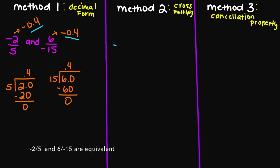Let's look at method number two — we cross multiply. So negative 2 over 5 and then 6 over negative 15. If I were to cross multiply, negative 2 times negative 15 is going to give me a positive 30. And then we have here 5 times 6 — this is also going to give me 30. So 30 equals 30. Yes, we know that these two fractions are indeed equivalent.